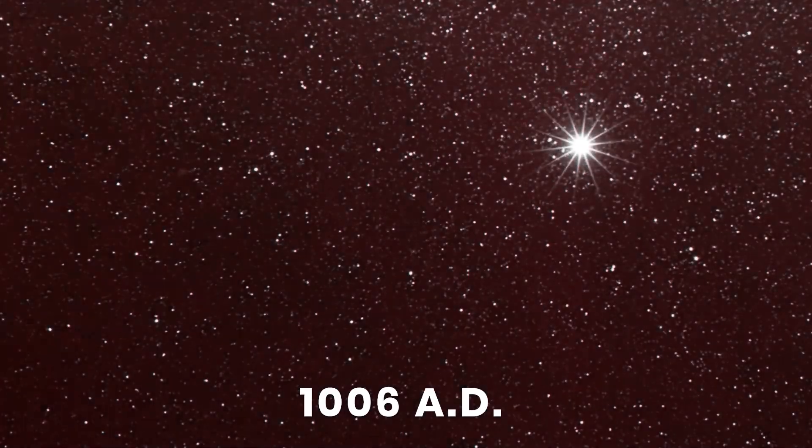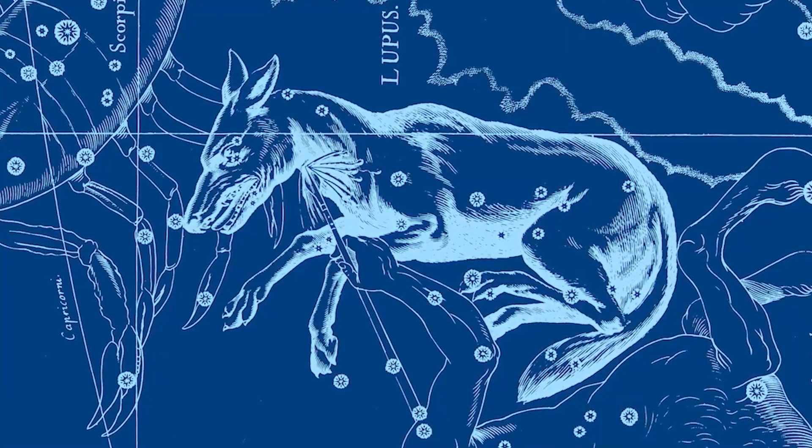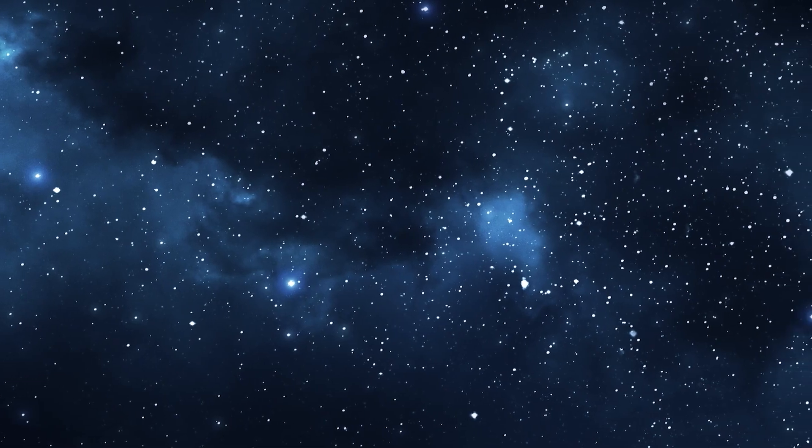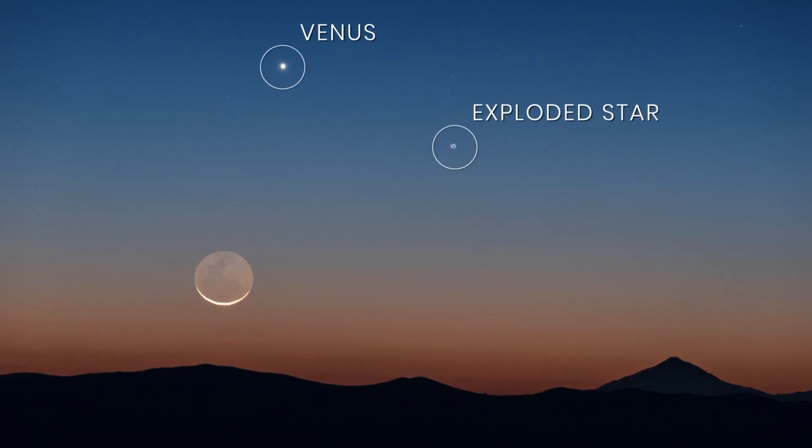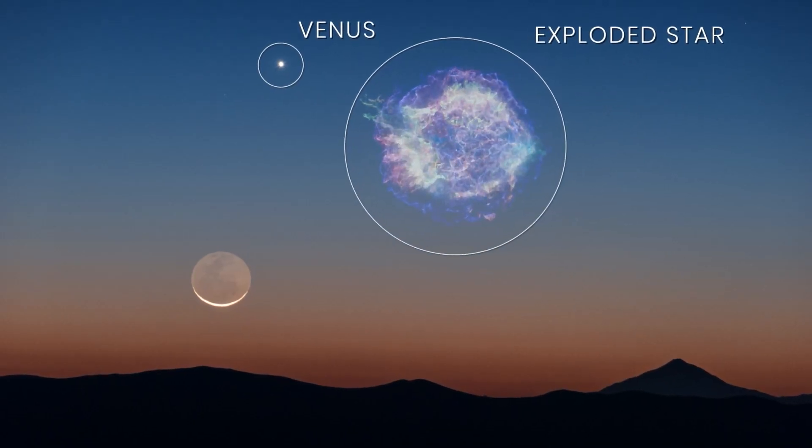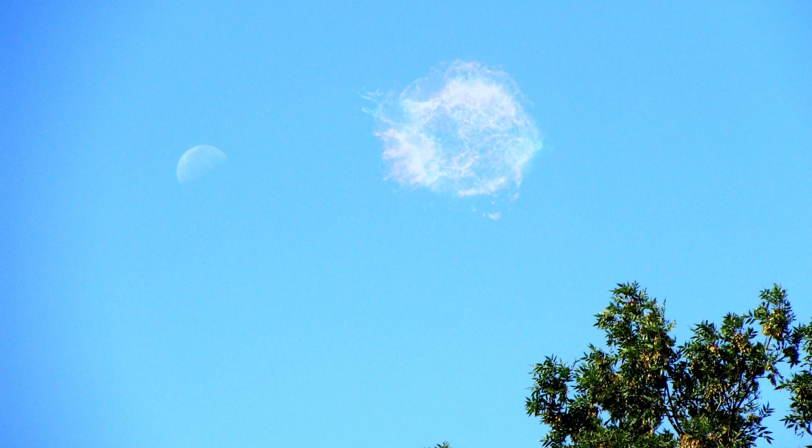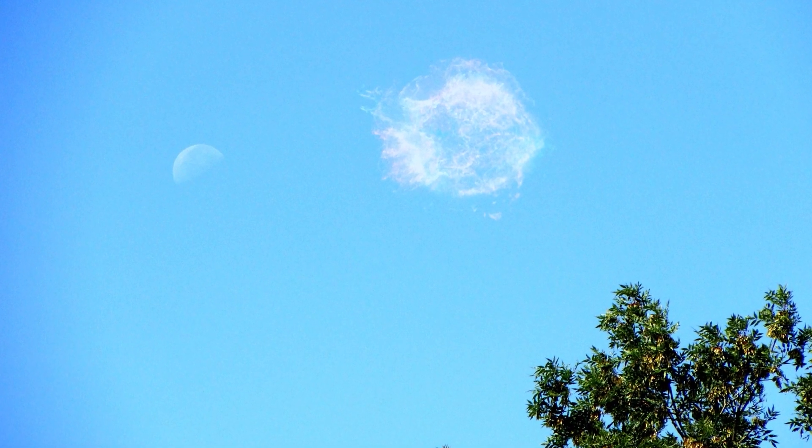In the year 1006 AD, a staggeringly bright star exploded in the constellation Lupus and could be seen brightly in Earth's skies. Current astronomers say it would have been 16 times brighter than Venus, the brightest object in our night skies beside the Moon. In fact, this supernova became so bright that it was visible in the skies during the day.